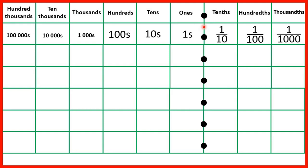Here we have a place value chart, and we count place values from the decimal point. Our whole number place values are our ones, tens, hundreds, thousands, ten thousands, and hundred thousands, and our decimal place values are our tenths, hundredths, and thousandths.